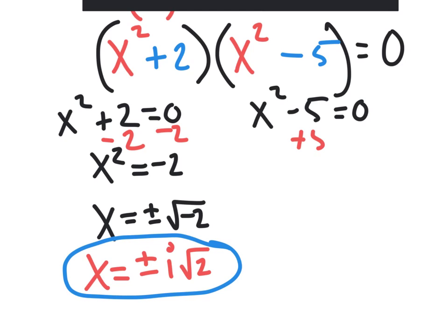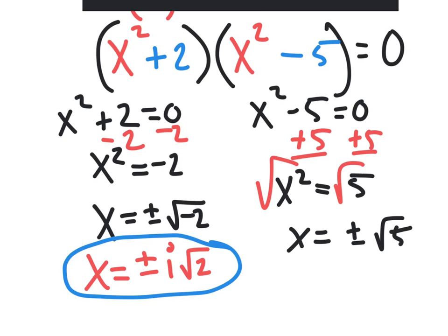Let's do the other one. We're going to add 5 and add 5. So we're going to end up with x squared equals 5. And of course, we're going to apply a square root on both sides. So you're going to get x equals plus or minus the square root of 5. And that's another two answers right there.